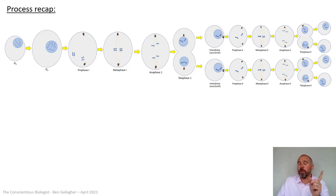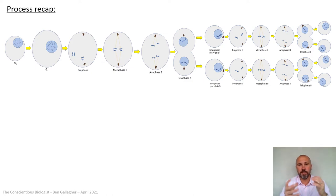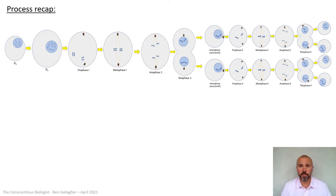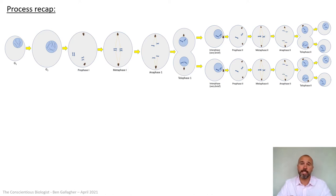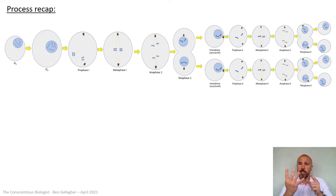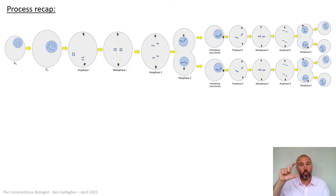So prophase one has the same preparatory events as prophase of mitosis: DNA condenses and super-coils via methylation and acetylation processes, the nucleus breaks down to release chromosomes, and centrioles migrate to the poles. But there's a fourth key event in prophase one of meiosis: the double chromosomes find their homologous partners, creating homologous pairs of double chromosomes containing four chromatids. The whole point of meiosis is to separate those four chromatids - which have the same genes at the same locus - into different gametes, so each gamete has one set of those genes.